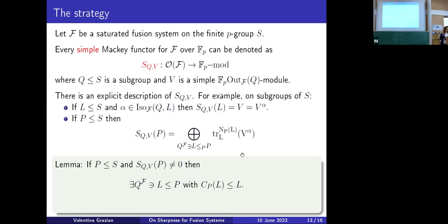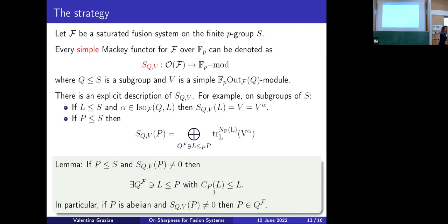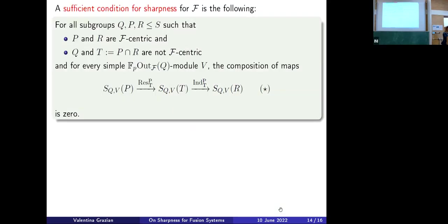From this explicit description, one can immediately deduce properties. For example, if P is a subgroup of S and S(Q,V) applied to P is non-zero, then P must contain a conjugate of Q, and moreover you can find at least one that is self-centralizing in P. A consequence: if P is abelian and S(Q,V)(P) is non-zero, then P is a conjugate of Q. So whenever you have an abelian subgroup mapped to a non-zero value by this simple Mackey functor, you know P must be fused to Q.